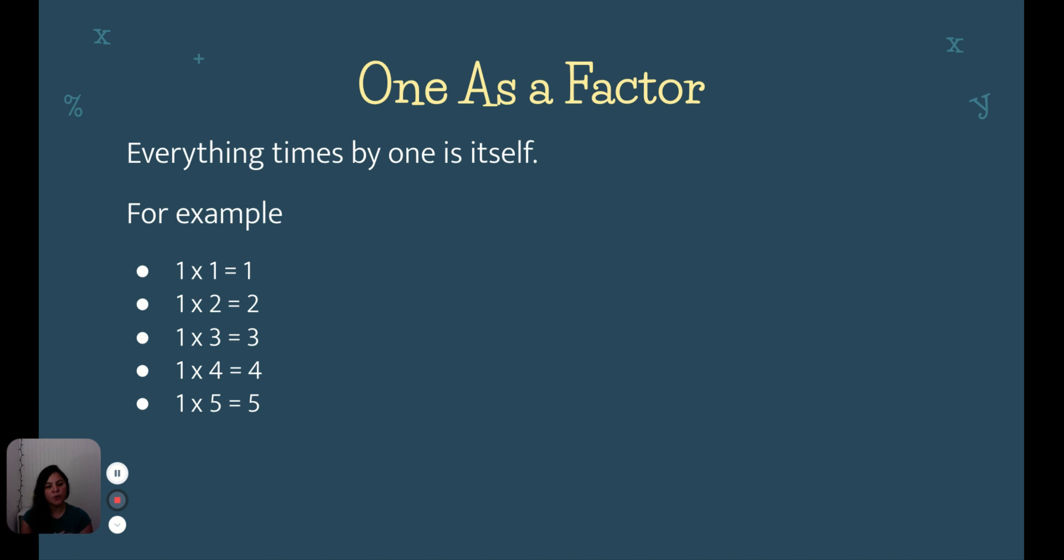1 times 4 is 4, and 1 times 5 is 5. Everything times one is itself.